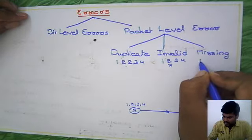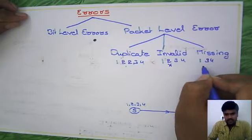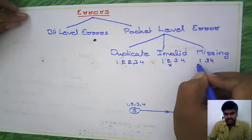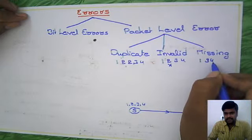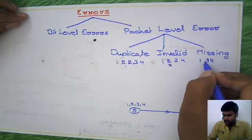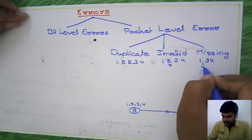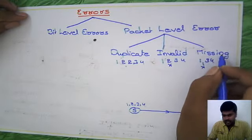In the missing case, you received only packets one, three, four. After ordering the packet numbers, you realize packet number two is missed. This is called the missing case.